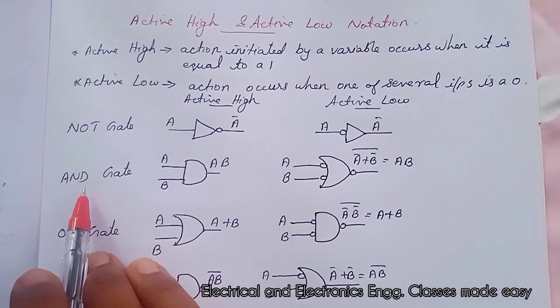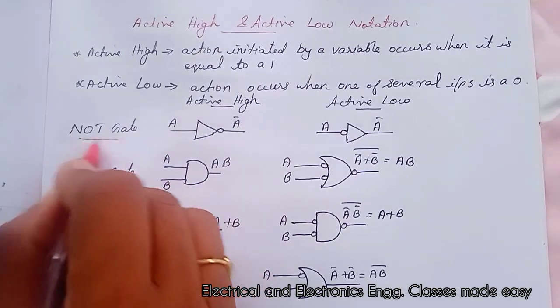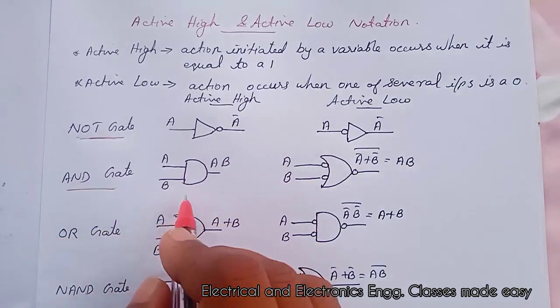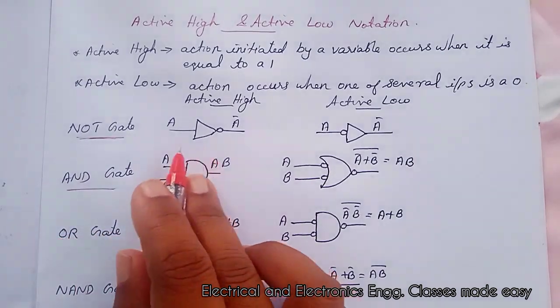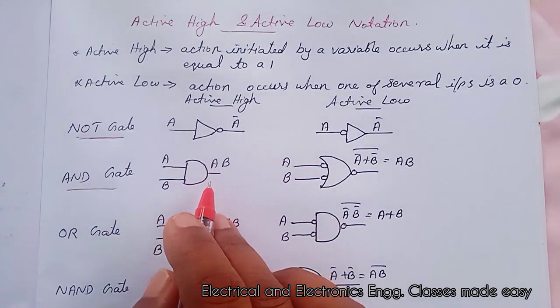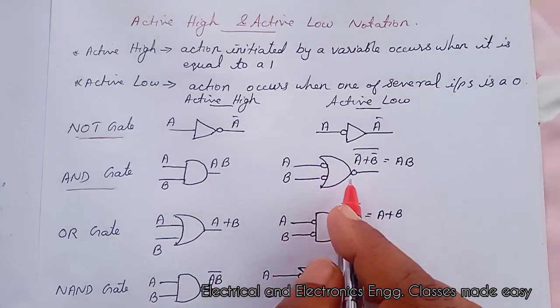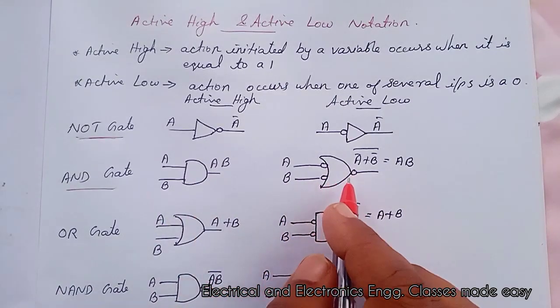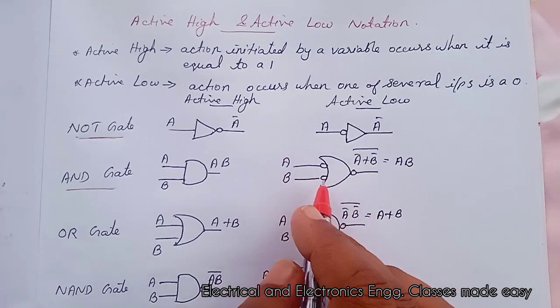And in the case of AND gate, this is active high notation. And this is active low notation for the AND gate.